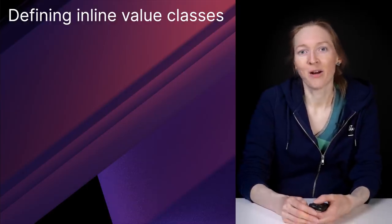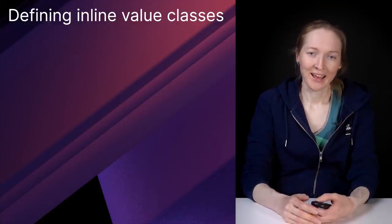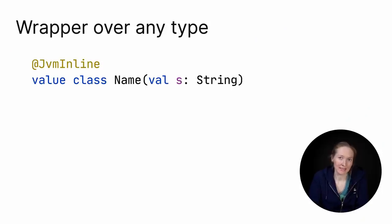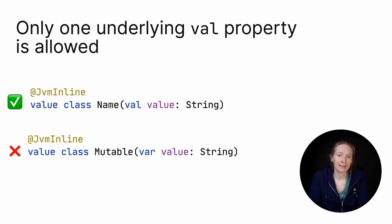Of course, you can define your own inline value classes. You mark the class as a value class and annotate it with a JVM inline annotation. An inline class can be a wrapper either for primitive or for any reference type, like string. Inline class is a wrapper of only one property, and this property should be read-only. Mutable vars aren't allowed.